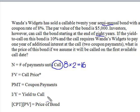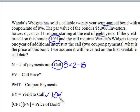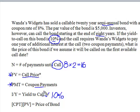I'm going to go down to the easy one, which is IY, which is yield to call. Yield to call is always going to be given in your problem, and in this case we have a yield to call of 10%. We have to calculate two things: what this bond is going to be worth when they call it at the end of 8 years, and also the coupon payment.